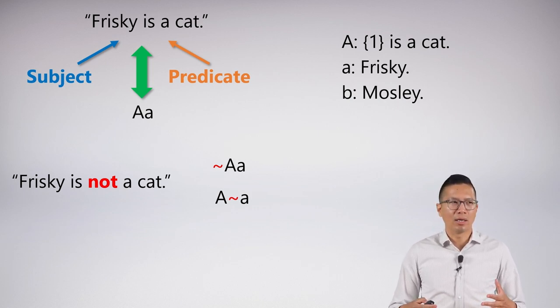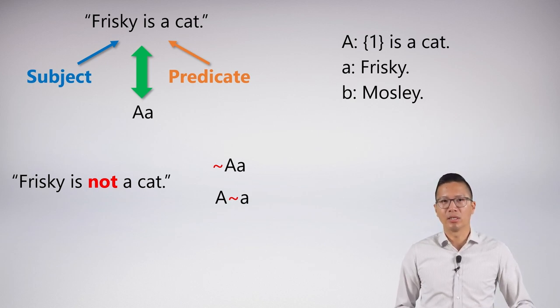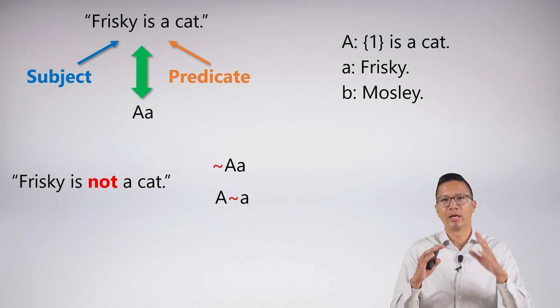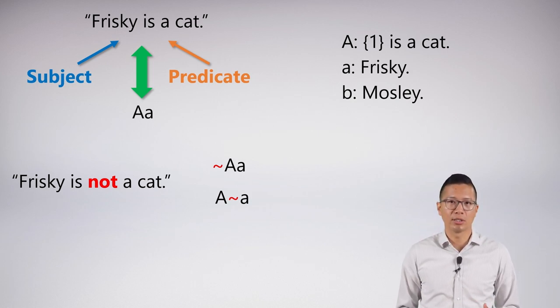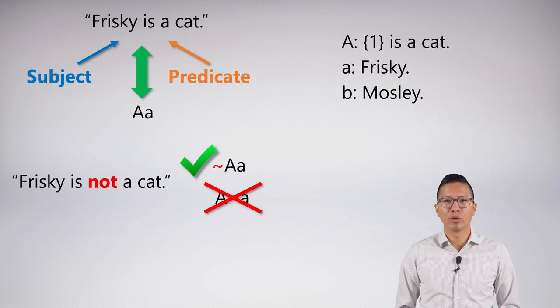If we look at the top one, it says it's not the case that Frisky is a cat, because we already know capital A, small a, says Frisky is a cat. So that's the right way to do it, and we don't want to put extra things into the predicates other than individuals.